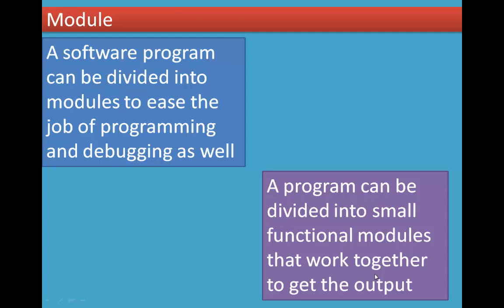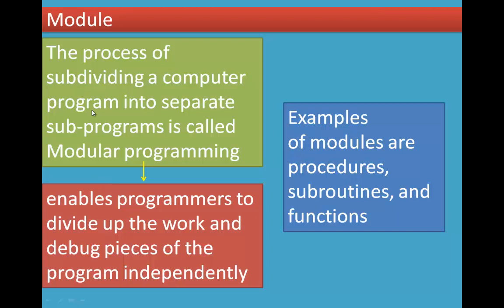Each module produces one output. We join and work them out. The process is sub-divided. To make the program, we sub-divide the process into modules — for example, procedures and functions.